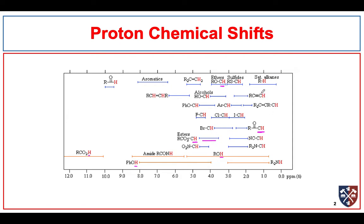Our aliphatic alkanes come somewhere between 1 and 2. Our aromatic region is somewhere between 6.8 and 8.1 ppm. Aldehyde protons come way out at 10, and carboxylic acids even past that. There's not much out there, so when we see signals in that region, they're very conclusive that we probably have an aldehyde or a carboxylic acid.